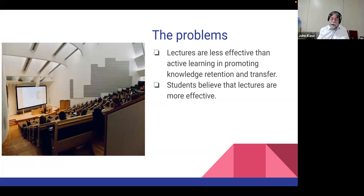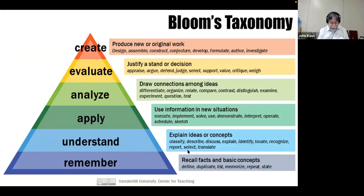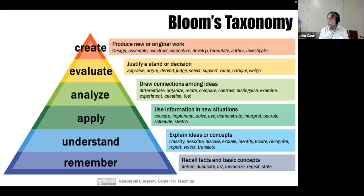But that's not the perception students have. One of the basic problems with lectures is what level they tend to operate at in terms of Bloom's taxonomy. In theory they can be at any level, but in practice, particularly in many of our classes, what level in Bloom's taxonomy do they tend to focus on?